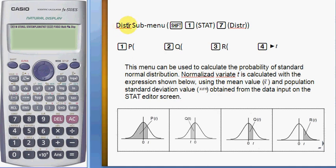This is the distribution sub-menu in the statistics function. P(t) is the area less than t. Q(t) is the area of the normal curve between 0 and t—it doesn't matter if t is positive or negative. And R is the probability for z greater than t.